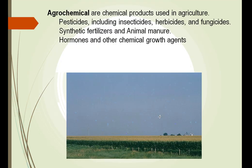Agrochemicals are chemical products used in agriculture. This includes a wide variety of different chemicals that we use, from the crop dusters spraying entire fields, to putting chemicals on our lawn. Some of these pesticides include insecticides, which kill insects, and herbicides, which kill plants.